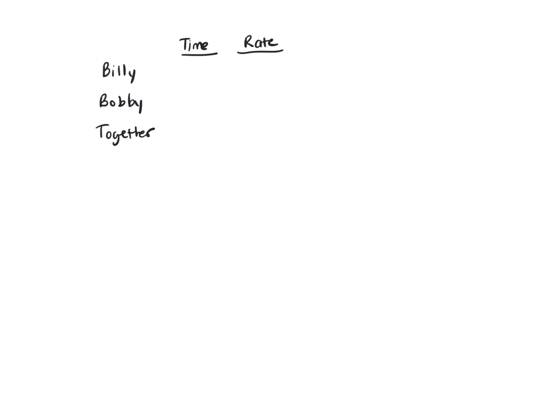I first do a setup for this problem, and it says that Billy and Bobby can mow their grandparents' lawn together in 98.